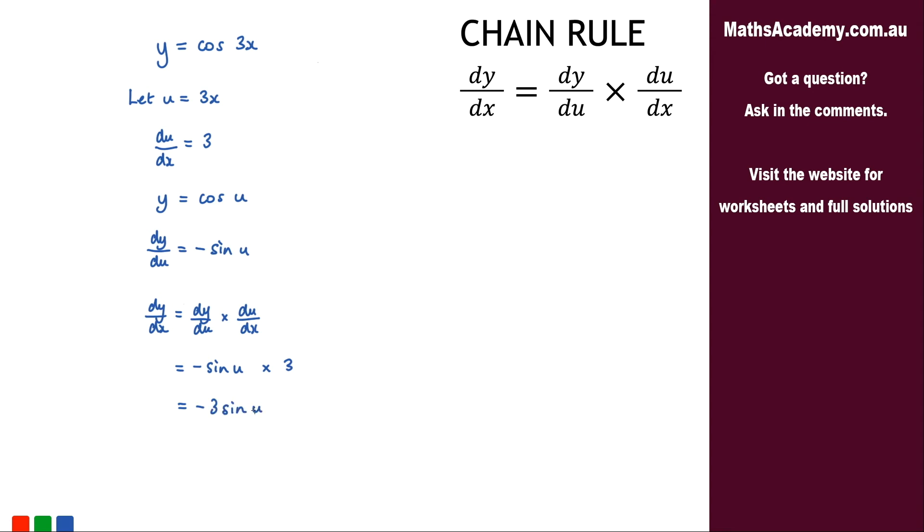Now the last thing to do is to substitute back in for u and we know that u is 3x. So if you pop that back in we'll have that dy by dx is equal to negative 3 sine of 3x.